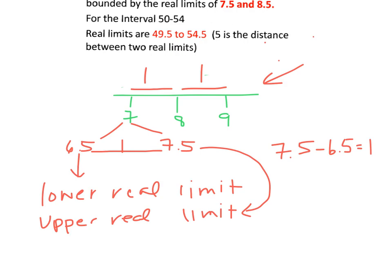And you'll notice that if you subtract 7.5 minus 6.5 you get an interval of 1. The other thing that you'll notice is to calculate the lower real limit of this number, we would calculate it by taking 7 minus 0.5 and that would give us 6.5. To get the upper real limit we would take 7 plus 0.5 and that would give us 7.5.